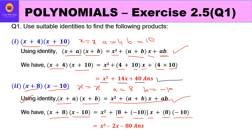Substituting into the identity: x², then (8 + (−10)) = −2, so we get −2x. Then a × b = 8 × (−10) = −80, and the plus outside with minus gives −80. So the product is x² − 2x − 80.